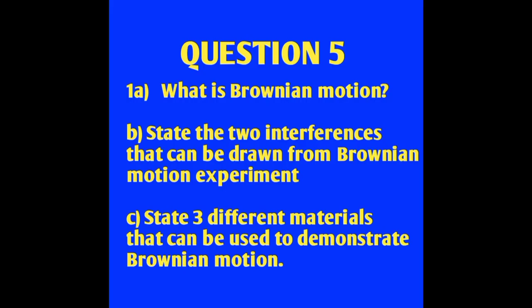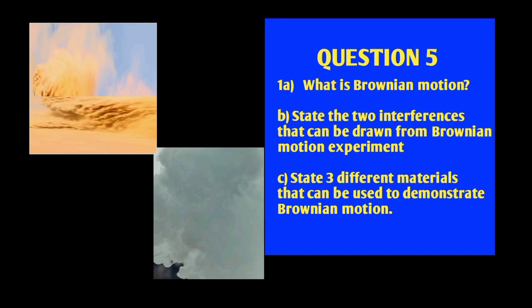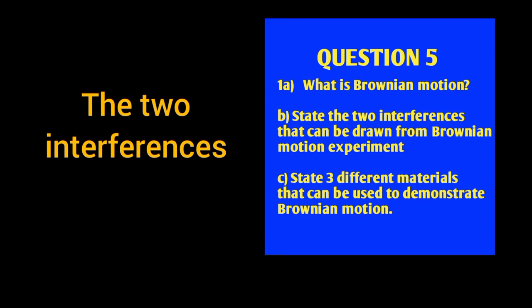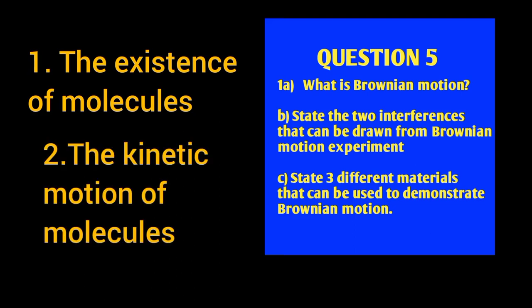Question five: What is Brownian motion? State the two inferences that can be withdrawn from Brownian motion. State three different materials that can be used to demonstrate Brownian motion. Brownian motion is the rapid, constant, and irregular motion of tiny particles. The two inferences that can be drawn from Brownian motion are: one, the existence of molecules; and two, the kinetic motion of molecules.